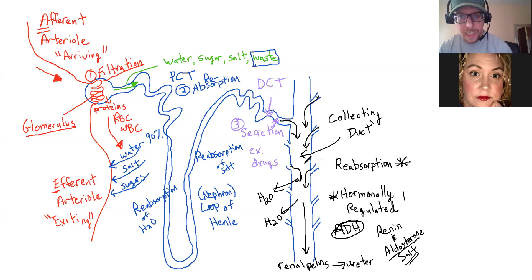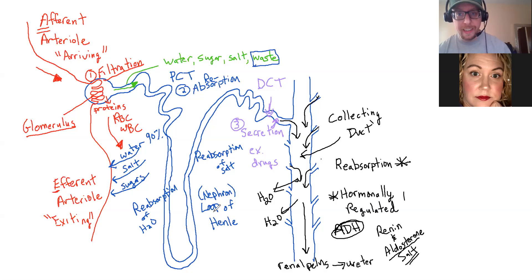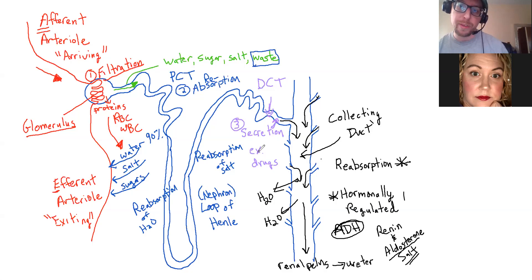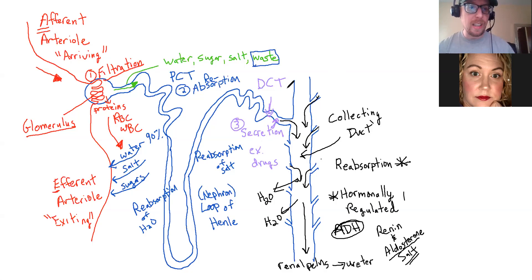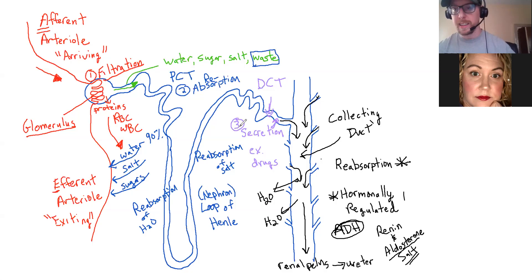So that's the function of the collecting duct. The three main functions: first is filtration, which occurs in the glomerulus. Second is reabsorption, which occurs in the proximal convoluted tubule, the loop of Henle, and the collecting duct if hormones are present. The third function is secretion, which occurs in the distal convoluted tubule - that's where you're forcing things out of the blood that did not get filtered, like very large chemicals and molecules such as drugs. This is a good breakdown of the nephron - the different parts and the three main functions.